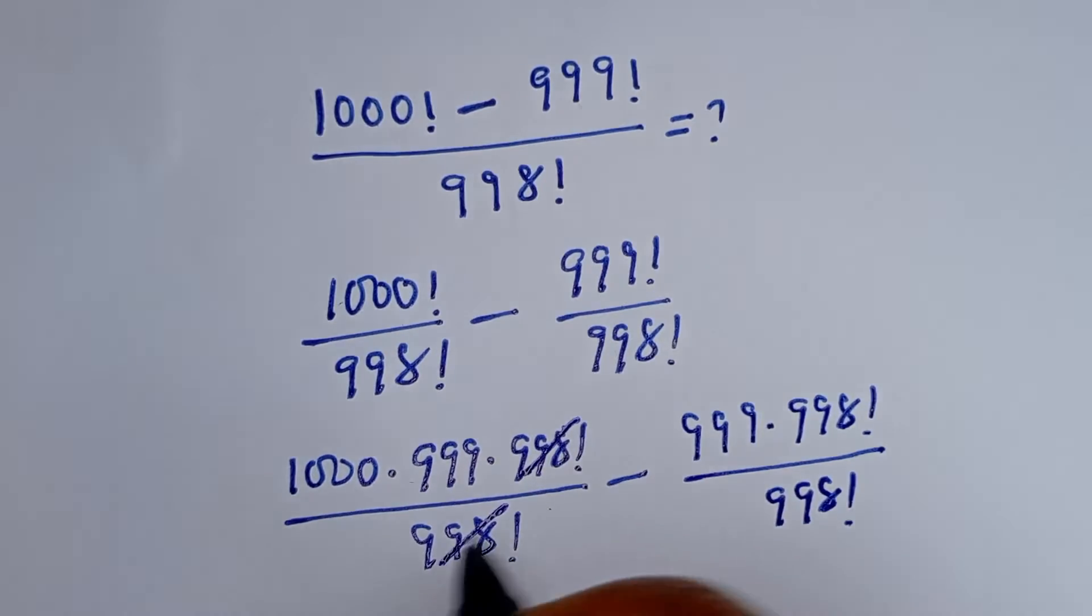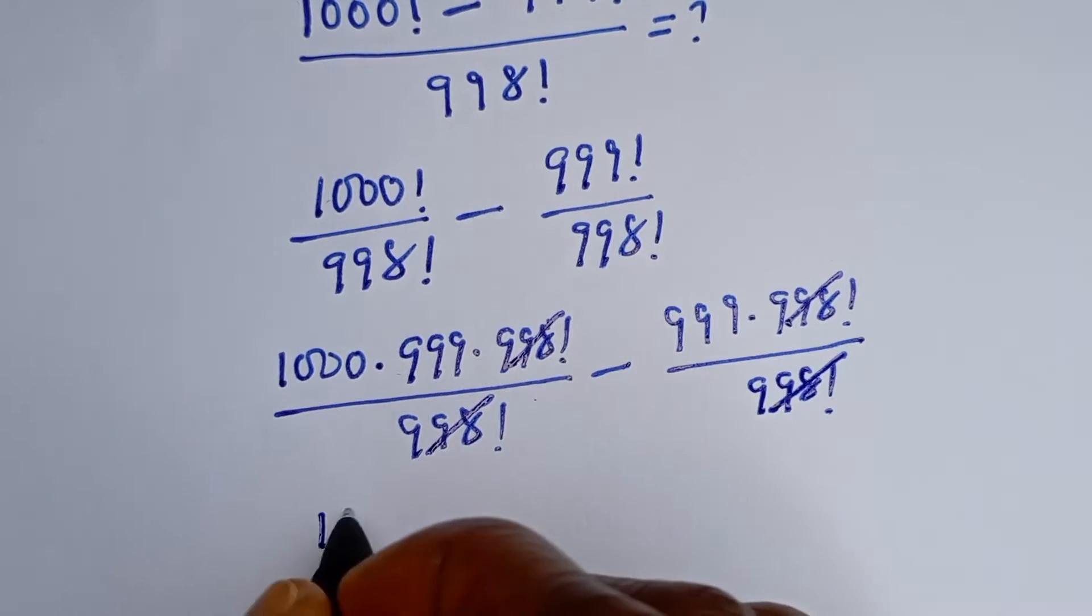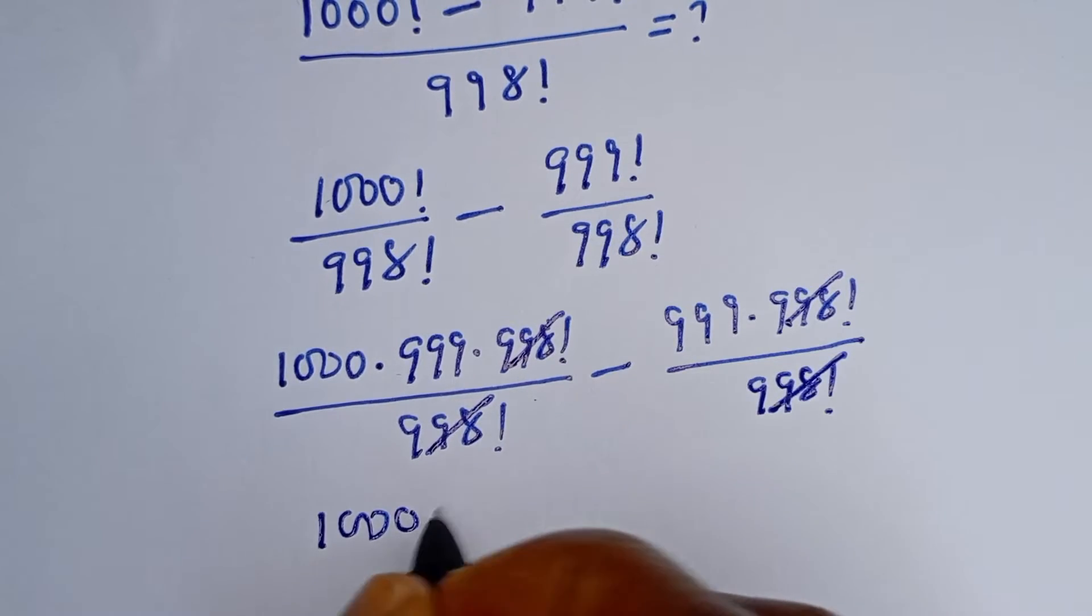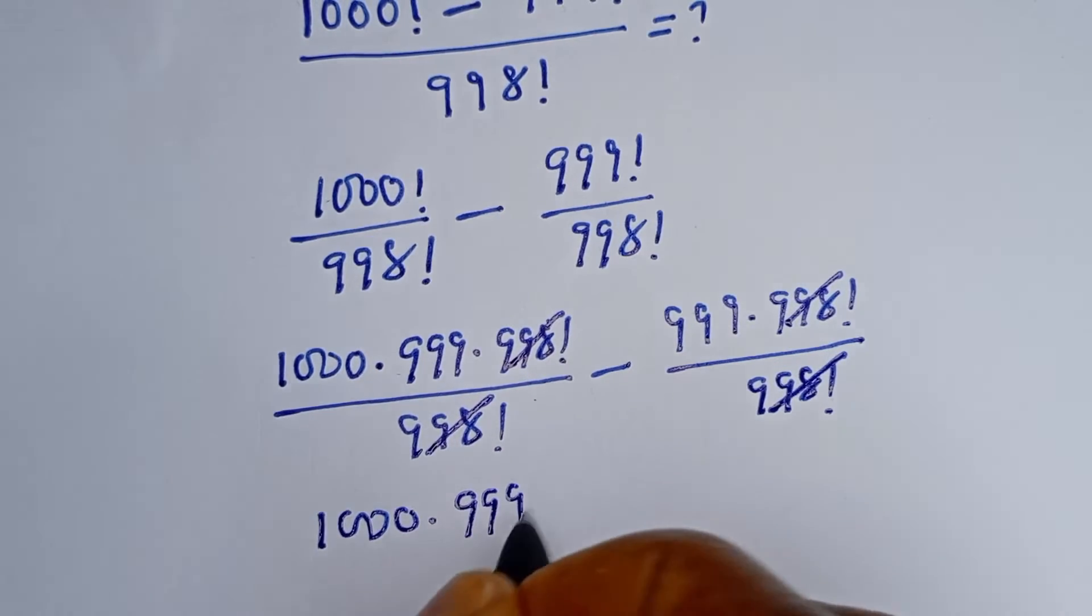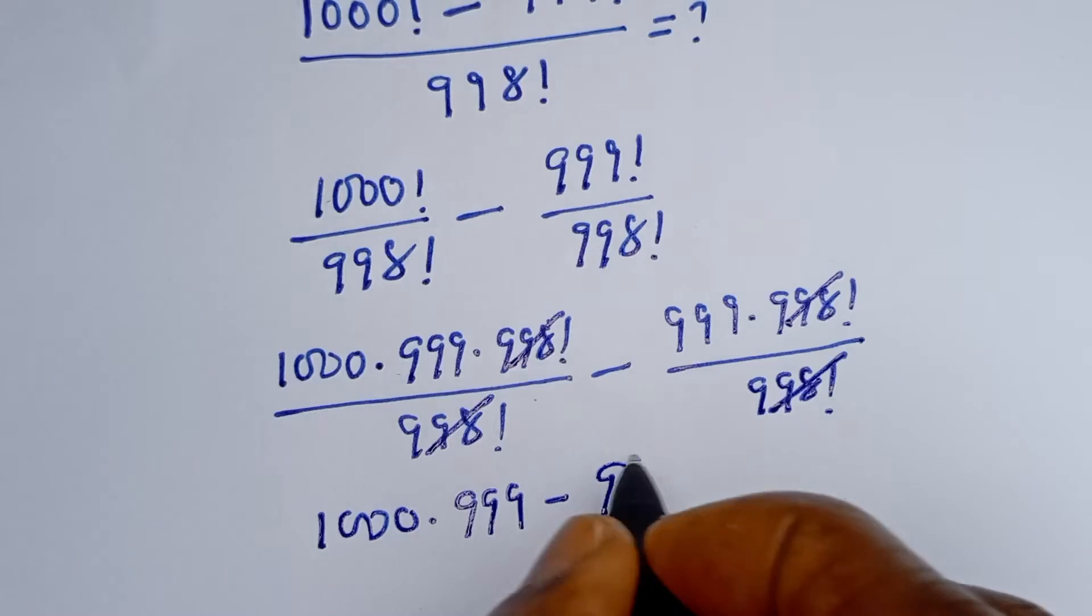This will cancel this. This will cancel this. Then this is 1000 multiplied by 999 minus 999.